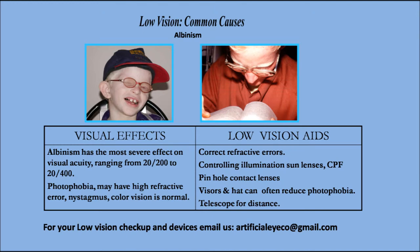Pinhole contact lenses can be used. Visors and hats can often reduce photophobia. For distance, a telescope is one of the best tools for school-going children who are albino — you can give them a monocular telescope to see the blackboard, and they will be able to read it independently.